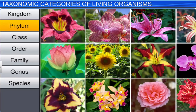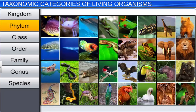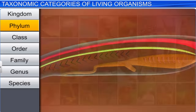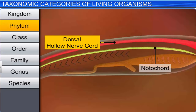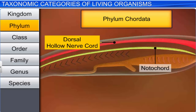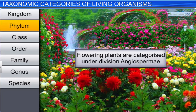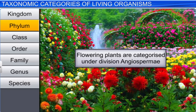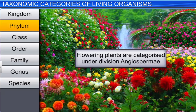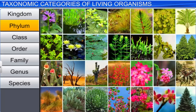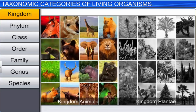Phylum, or division, is the next category. Animals like fishes, amphibians, reptiles, birds, and mammals have common features like the presence of notochord and a dorsal hollow neural system, and are thus categorized as Phylum Chordata. Similarly, all flowering plants are categorized under the division Angiospermae, or Magnoliophyta. The highest taxonomic category is Kingdom. All animals are put under Kingdom Animalia, and all plants fall under Kingdom Plantae. As we go higher from species to Kingdom, the number of common characters goes on decreasing.